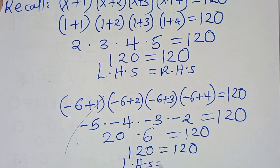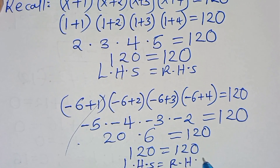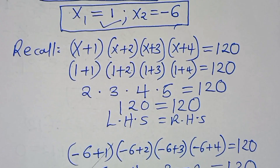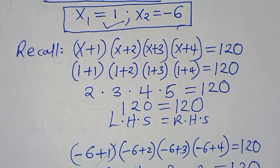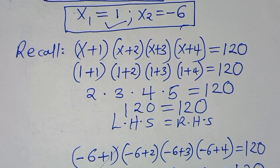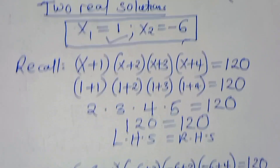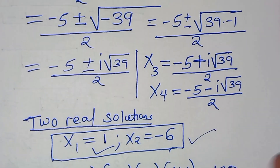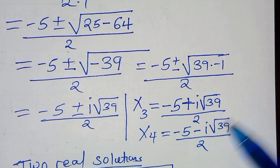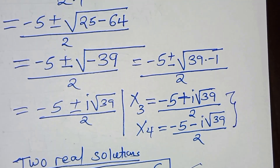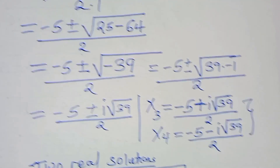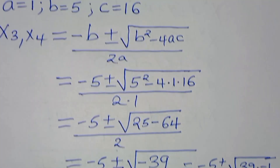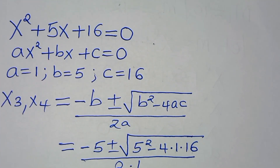The left side equals the right side. Therefore we have two real solutions x₁=1 and x₂=-6, and two complex solutions x₃ and x₄. Thank you for watching, please follow the steps, like this video and subscribe.